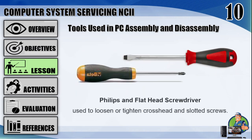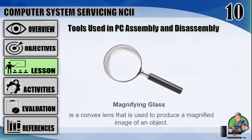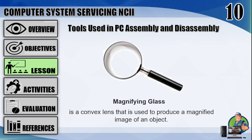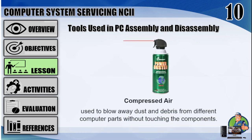Number 3: Phillips and flat head screwdriver, used to loosen or tighten cross head and slotted screws. Number 4: magnifying glass is a convex lens that is used to produce a magnified image of an object. Number 5: compressed air, used to blow away dust and debris from different computer parts without touching the component.